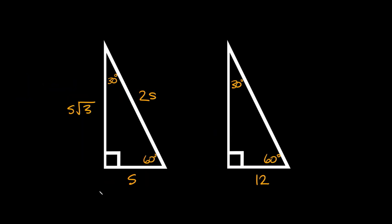Now let's move on to 30-60-90 triangles. As you can see — 30 degrees, 60 degrees, 90 degrees — these also have special proportions we can use to solve for all three sides. The easiest way is to find the shortest side first, because the hypotenuse is just 2 times the short side, and the long leg is that short side times the square root of 3.